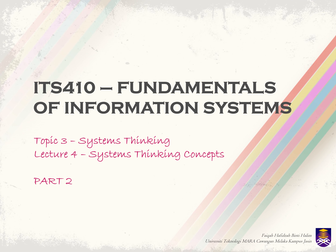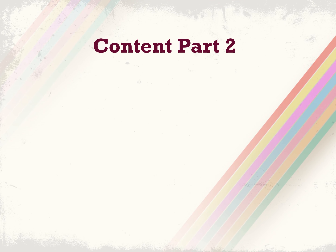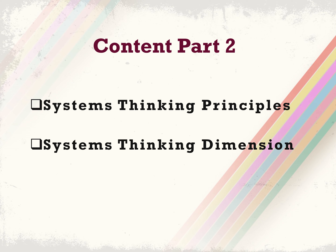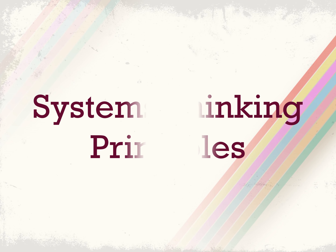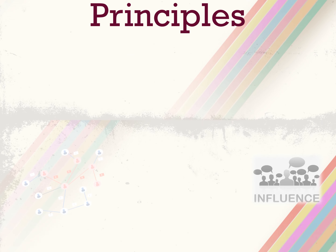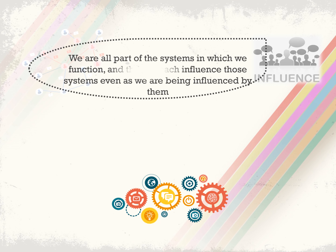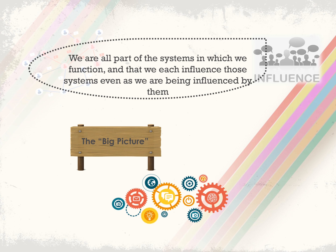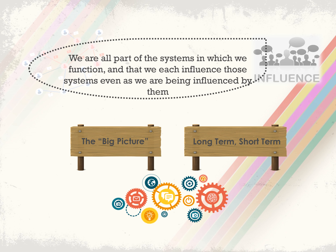Let's move on to part two. For part two, we are going to cover systems thinking principles and dimensions. We learn that we live in an environment which is actually a system. We live and function within the system, and we might not realize that we are actually influenced by the system in terms of our daily activities. The systems are also being influenced by us. Based on this, there are four items in systems thinking principles.